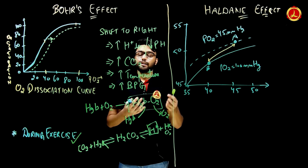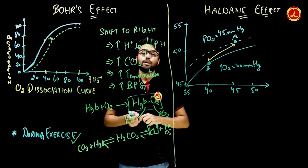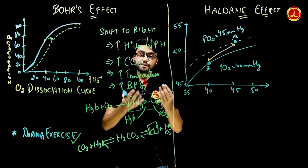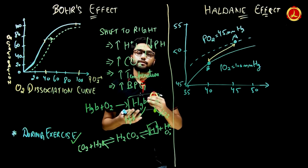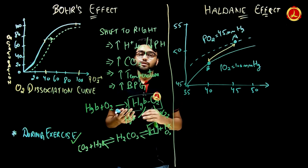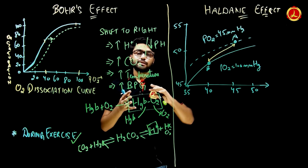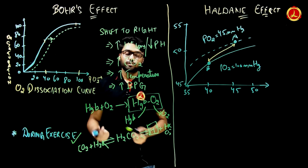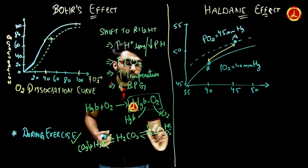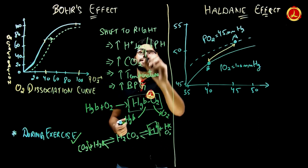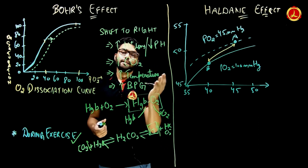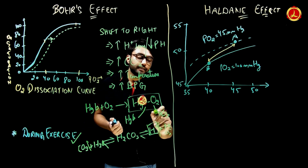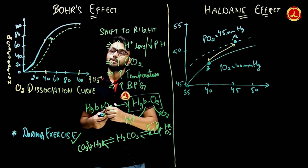The Bohr effect is very important during exercise. Muscles require more oxygen and undergo aerobic respiration. They use oxygen and carbohydrates to produce energy and carbon dioxide. More CO2 means more H+ ions, which means a stronger right shift, greater oxygen dissociation, and increased oxygen supply to the muscles.